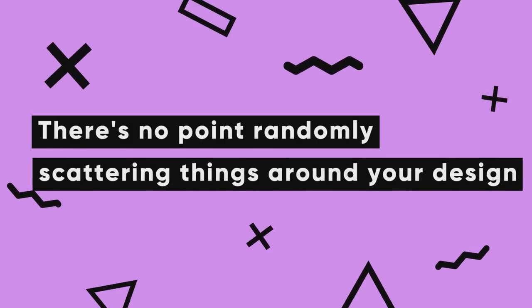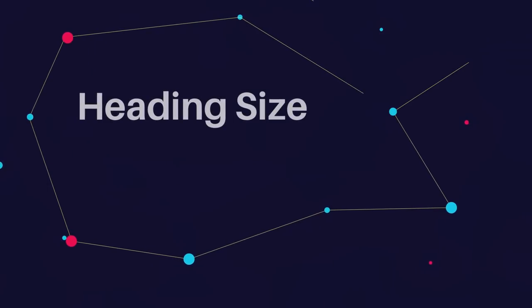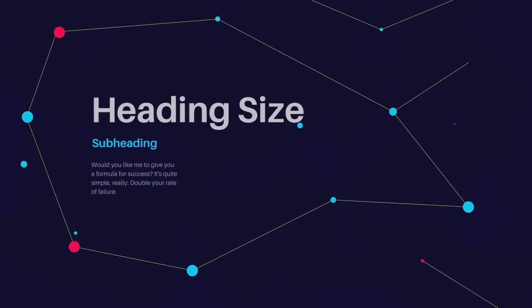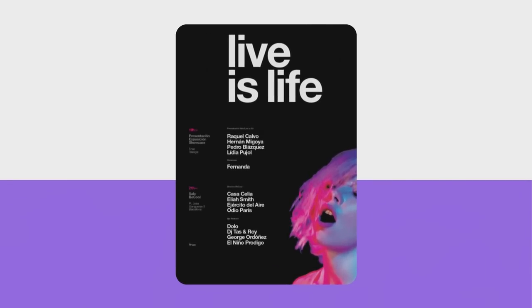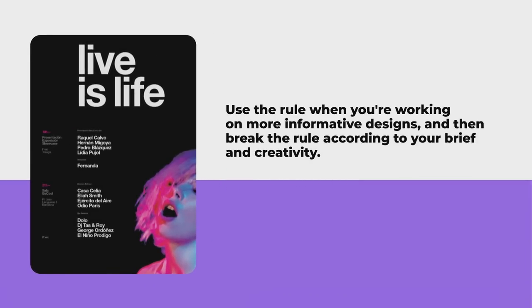Here's a handy tip for balancing text on your designs. For informative designs with a title, subtitle, and body text, it can be tricky to decide on sizing and balance. The rule I often use: choose your heading size — let's say we run with the typeface Elron at size 100. The subheading should be around half of that, so about 50, and then the body text should be a third of the heading, so around 33 to 35. This rule works really well in a lot of situations, but for designs with huge or display text, it goes out the window. Use the rule for more informative areas, then break it according to your brief and your creativity.